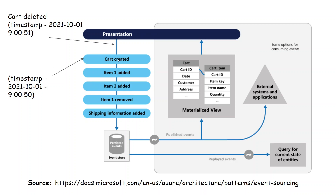So this event is appended first, and then this event is appended second. This basically avoids concurrent changes because we're not updating the same event object at the same time — we're simply appending new events based on the time when they arrive to the event store.